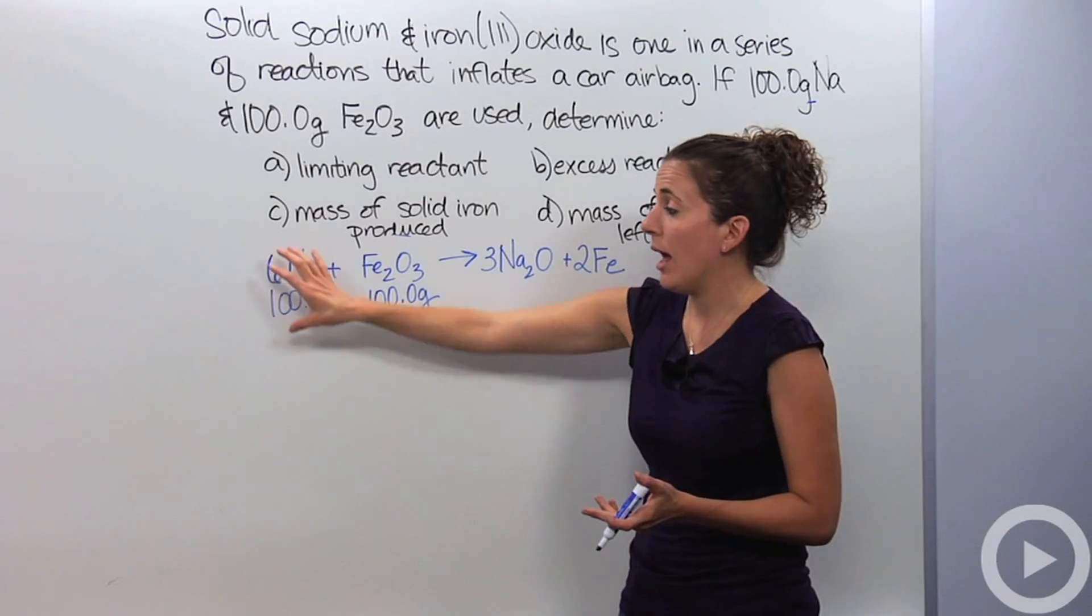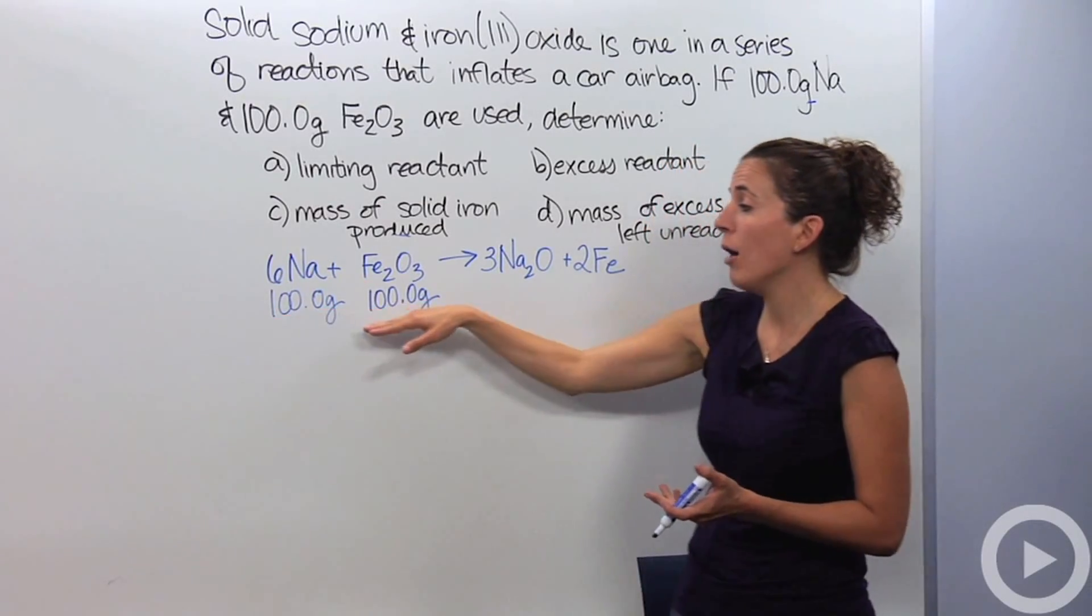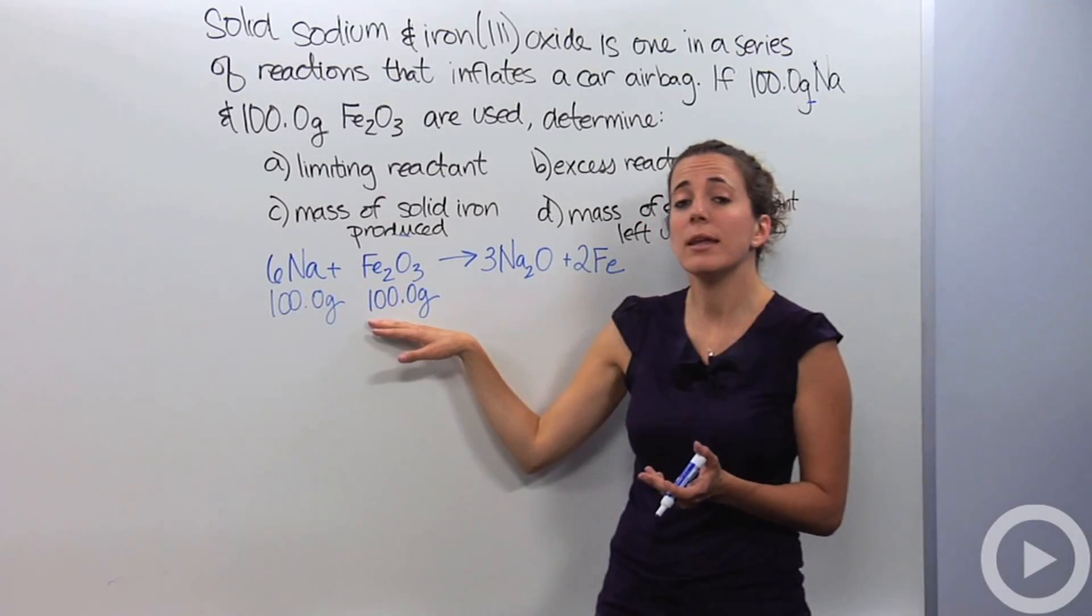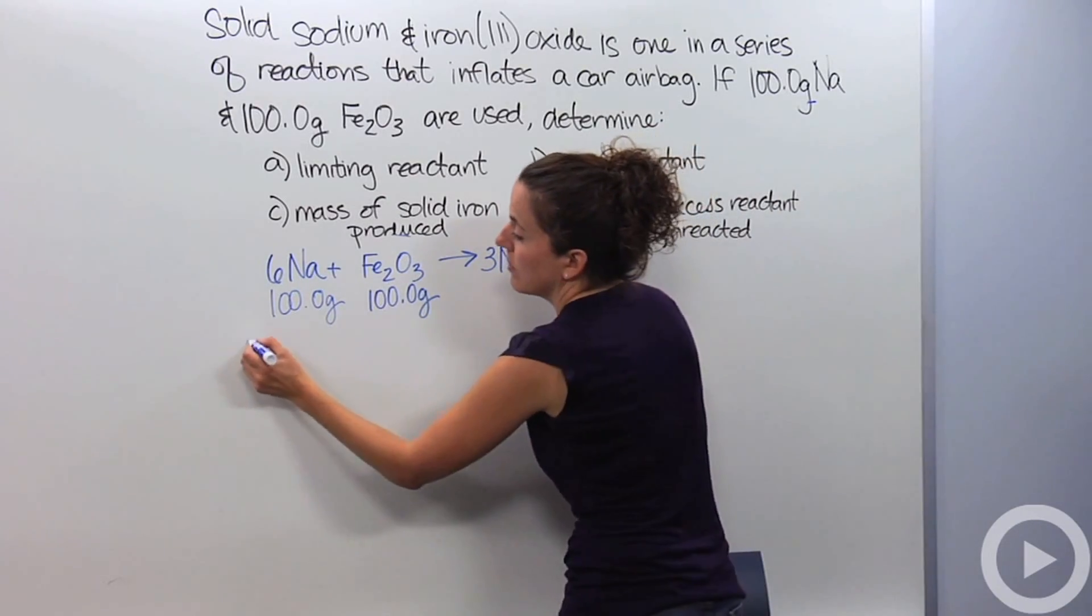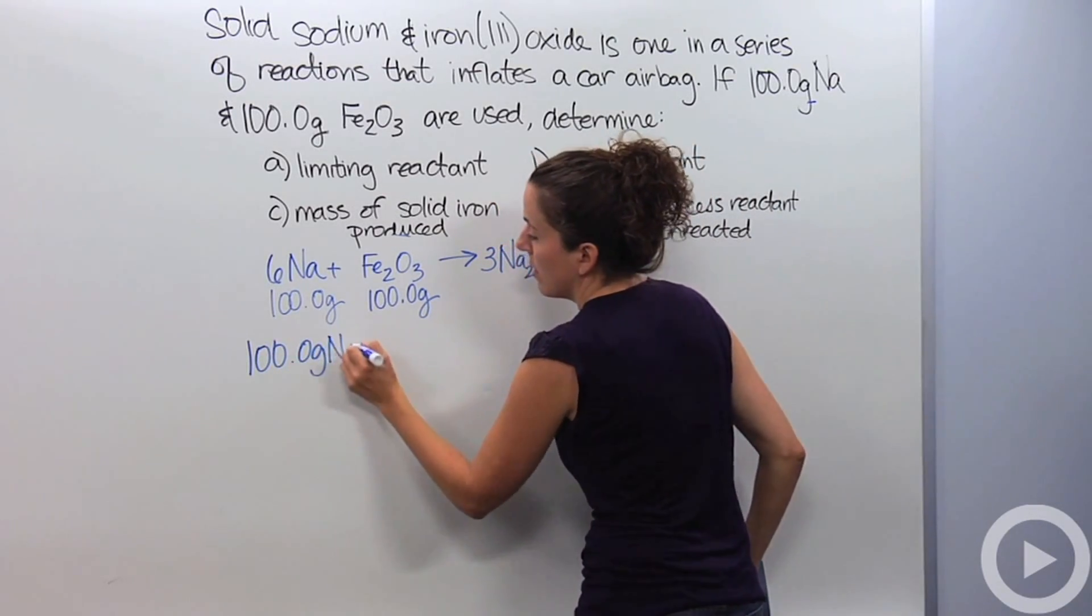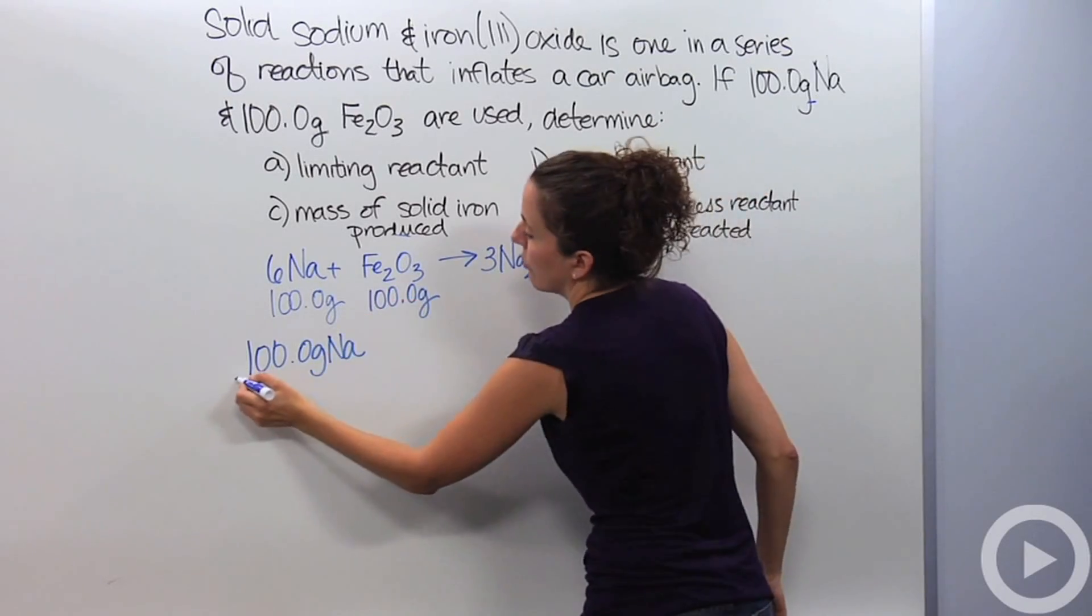So, I'm going to figure out, if I'm given 100 grams of sodium, how much iron three oxide am I going to need to react with this fully? So, I'm going to start doing a mass-to-mass problem. So, I'm going to say 100 grams of sodium. And the only way to compare these is going through moles.